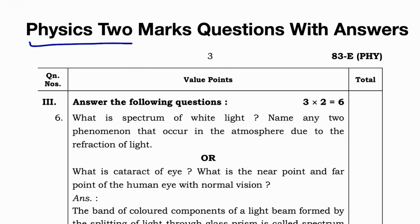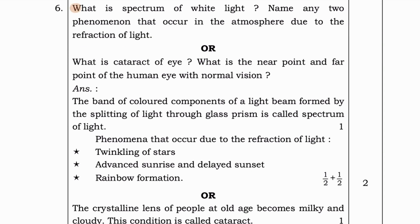Physics, two more questions with answers. First question here. What is spectrum of white light? Name any two phenomenon that occurs in the atmosphere due to the refraction of light.